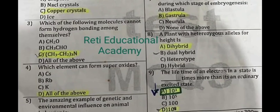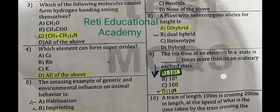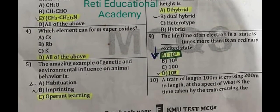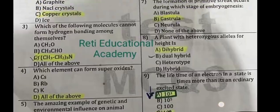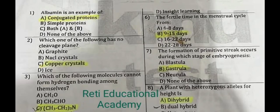Question number 5: The amazing example of genetic and environmental influence on animal behavior is operant learning. Question number 6: The fertile time in the menstrual cycle is B: 9 to 15 days. Question number 7: The formation of primitive streak occurs during which stage of embryogenesis?